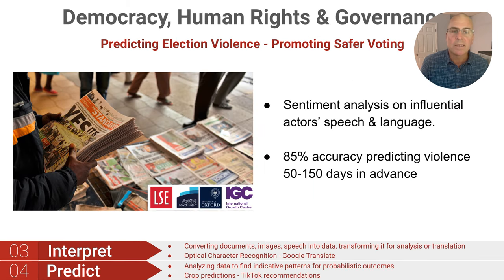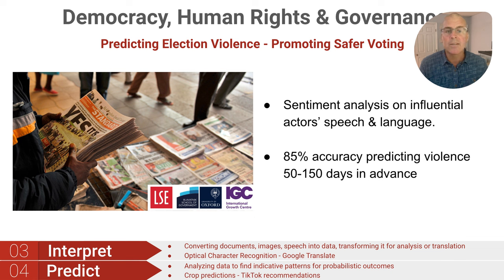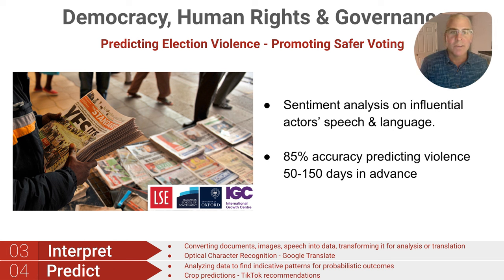In democracy, human rights, and governance, we need to be concerned about election violence in many countries, including my own. Several researchers found that they could convert written text into data for sentiment analysis — determining if a phrase is positive or negative in context — and predict if influential actors are promoting violence in their speech. In a stunning discovery, they reached 85% accuracy in predicting Kenyan election violence 50 to 150 days in advance, enough time, one would hope, to reduce or eliminate that violence.